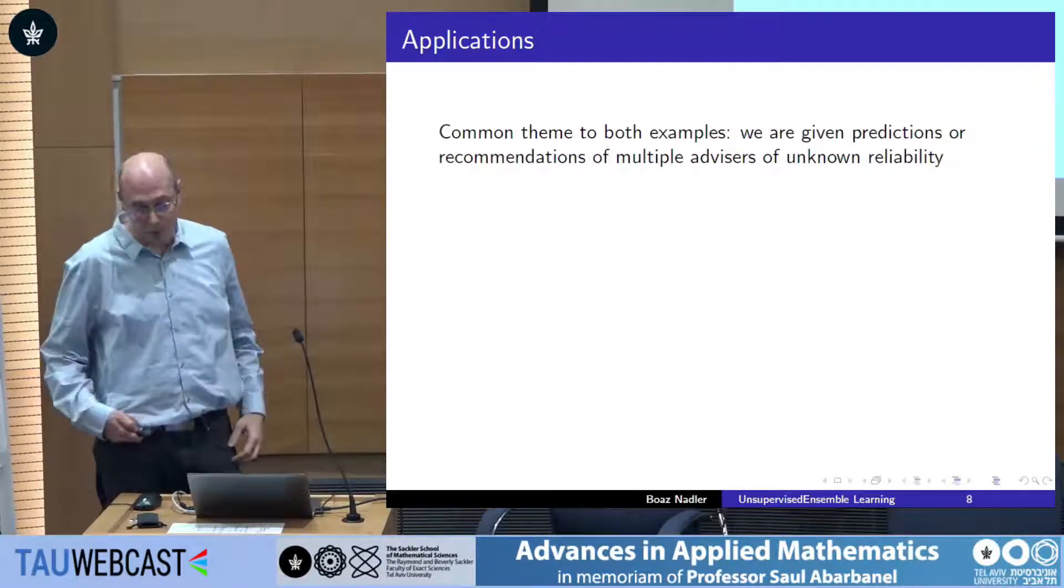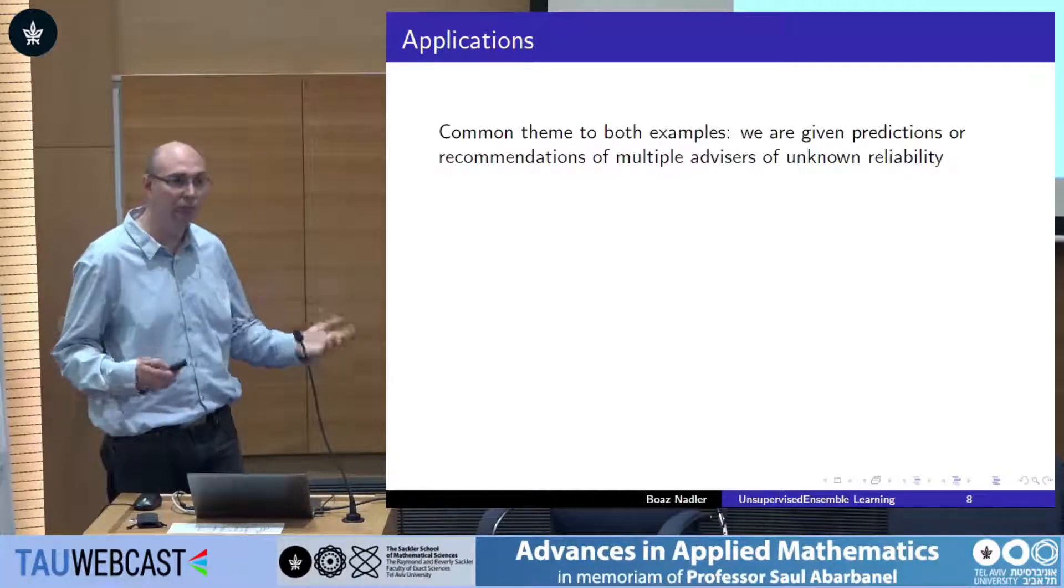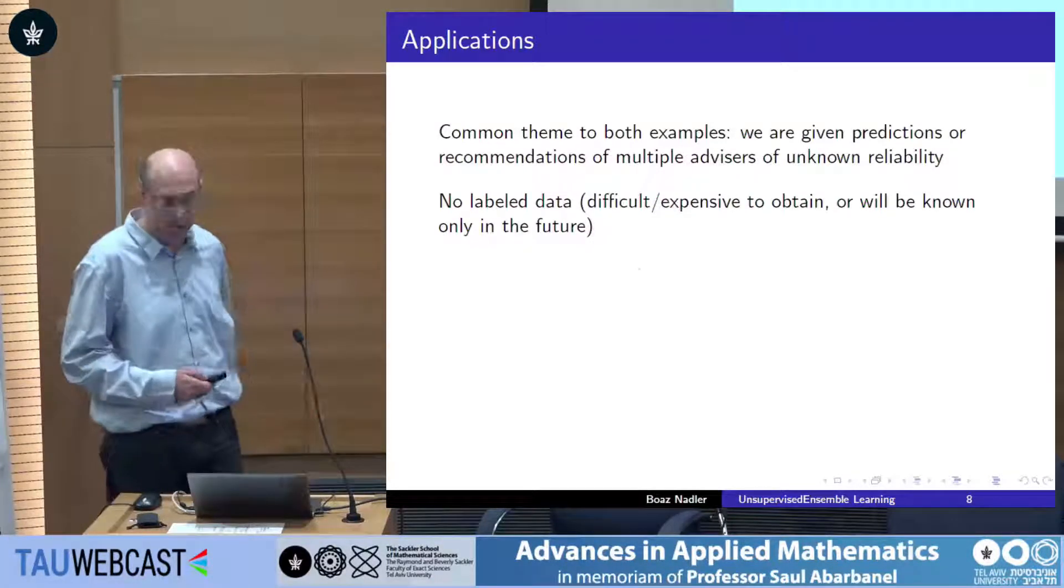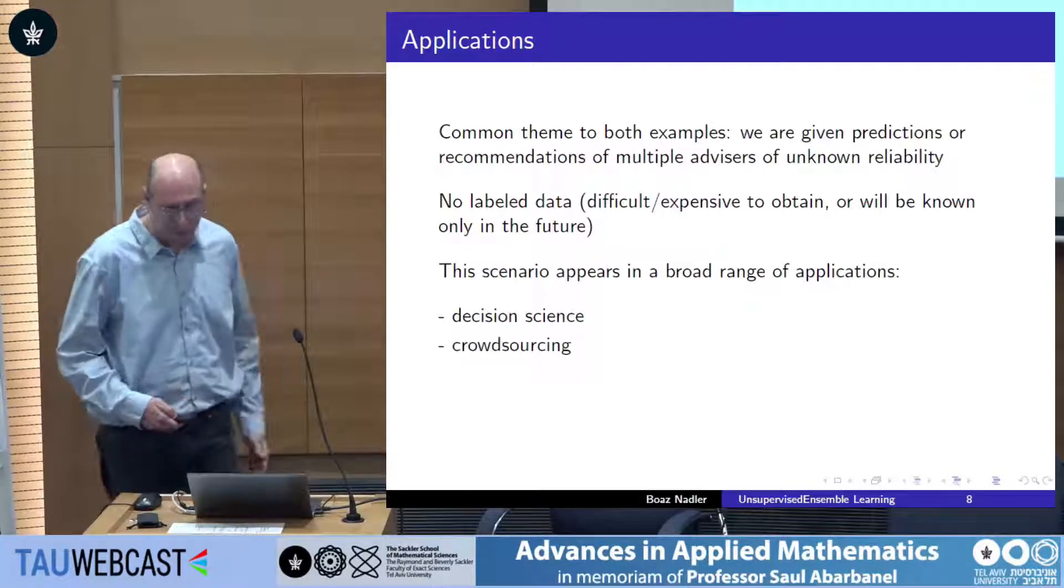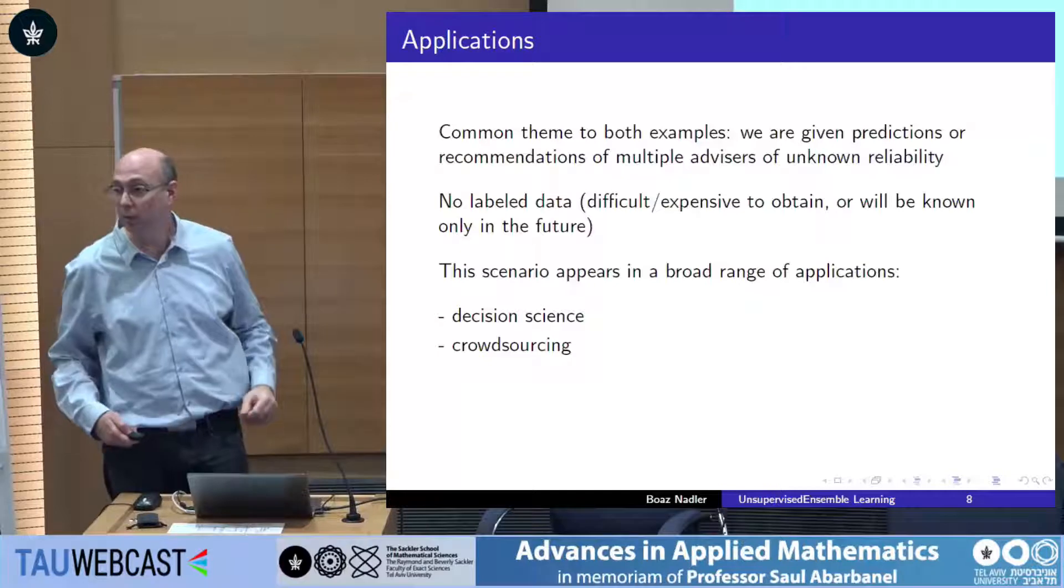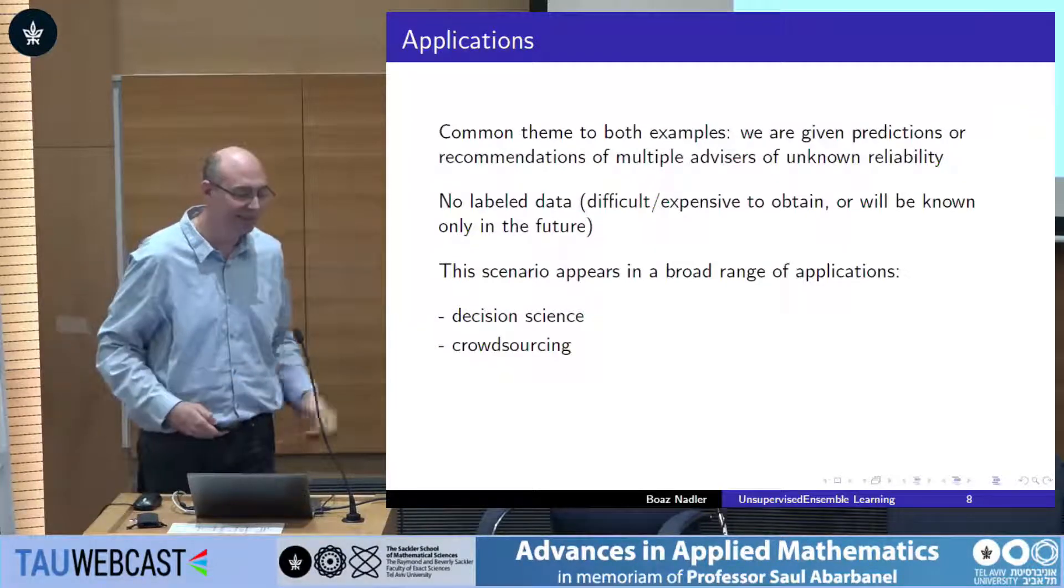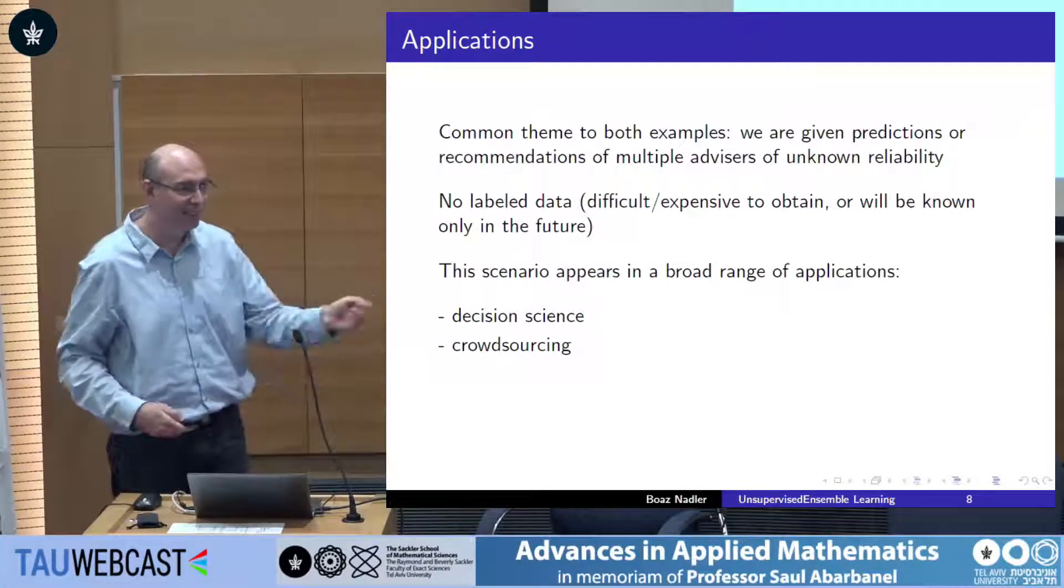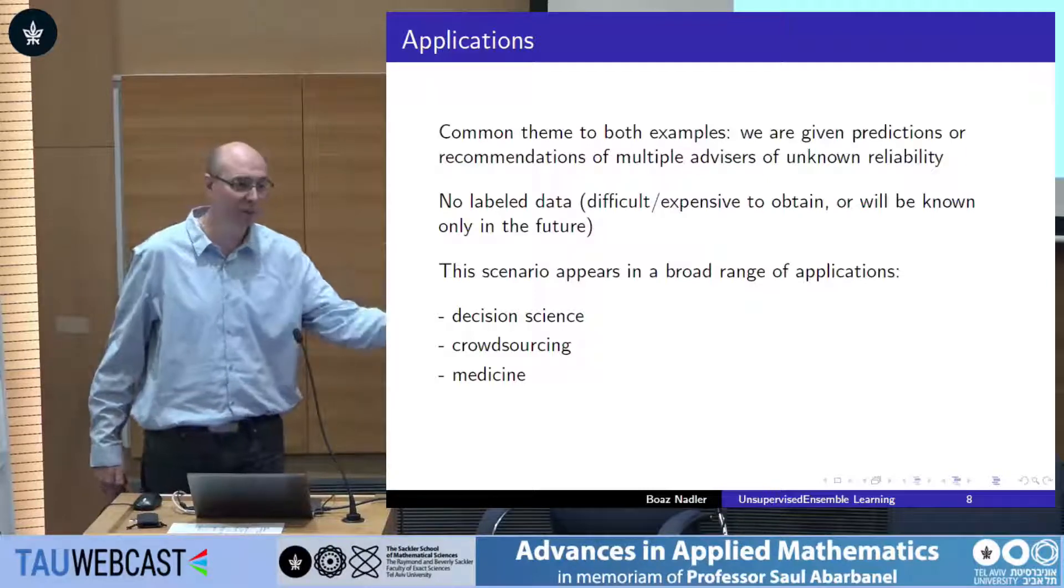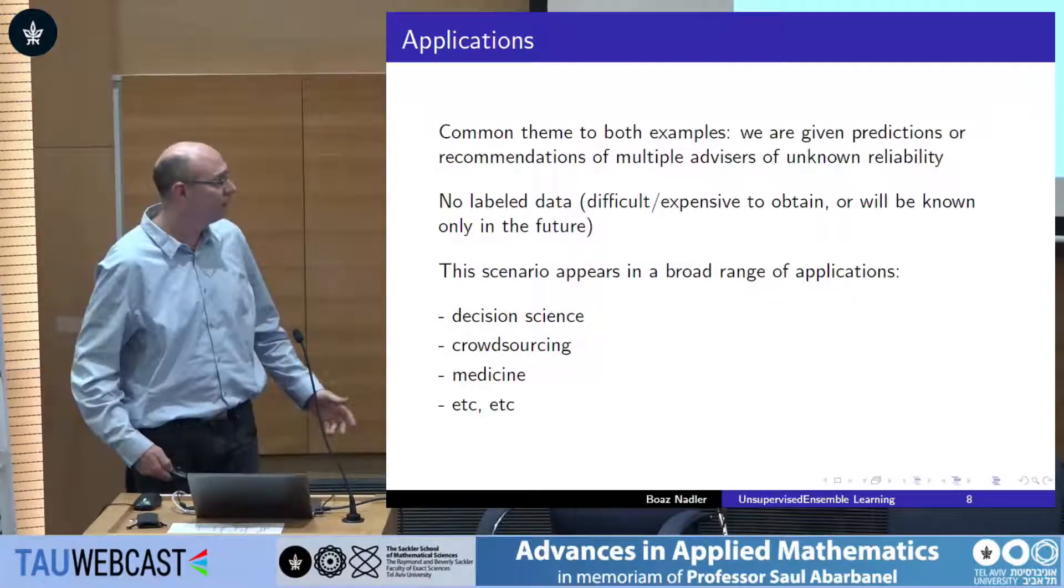There are many problems of this kind. So that was the true scientific challenge. And what's common to these two examples is that we observe the predictions or recommendations of many experts of unknown reliability or expertise. We don't have label data. It may be either expensive to obtain or I'll know it only in the future. And this appears in a broad range of applications. There's a whole field about decision science, which is about how to make decisions given experts' opinions. There's something called crowd sourcing, where you relegate to a crowd of typically students. You give them five cents for each answer, and they give you their predictions. It happens in medicine. You have a complicated patient. You ask for the opinion of several doctors. They don't always agree.